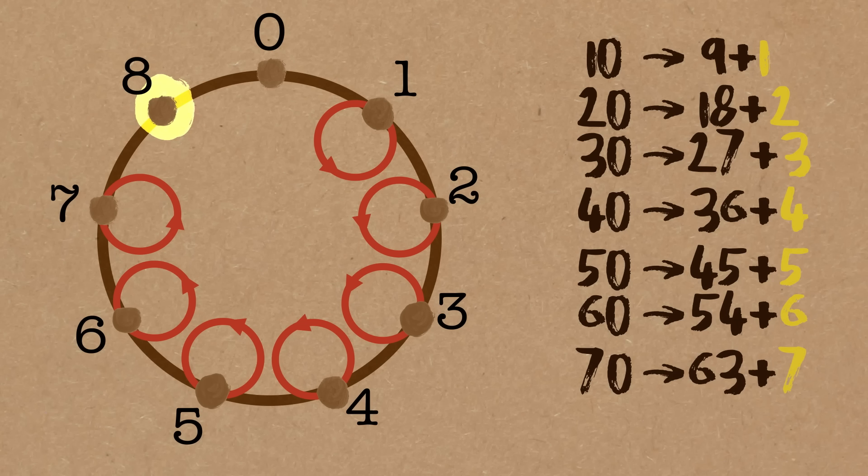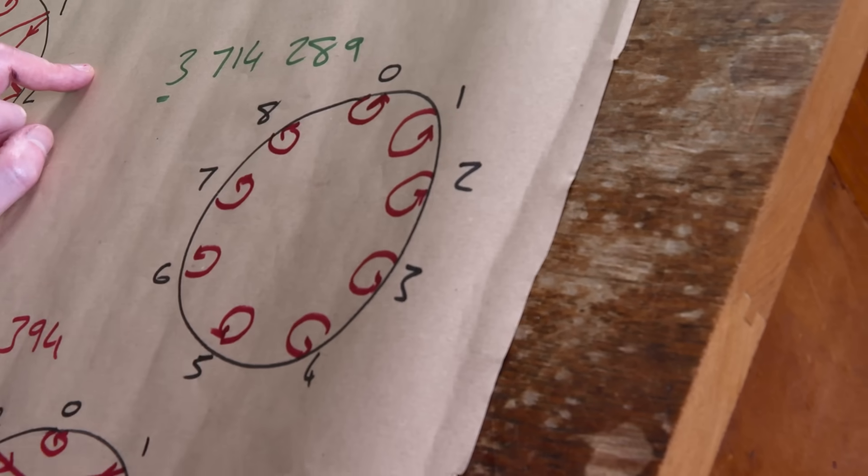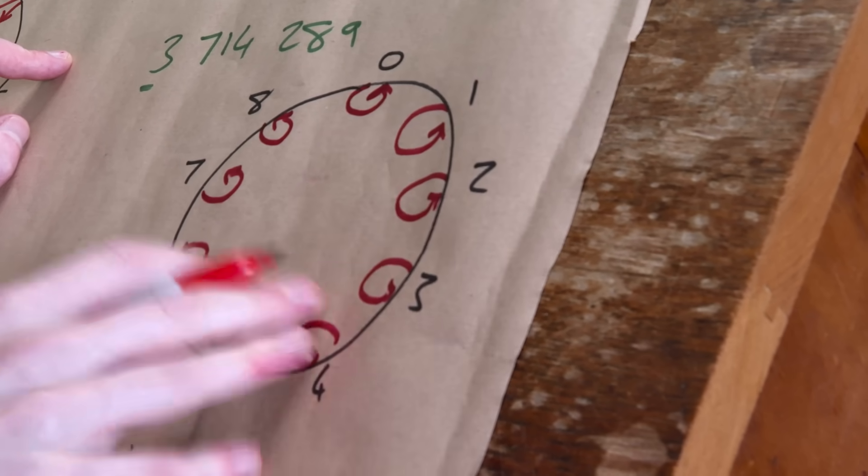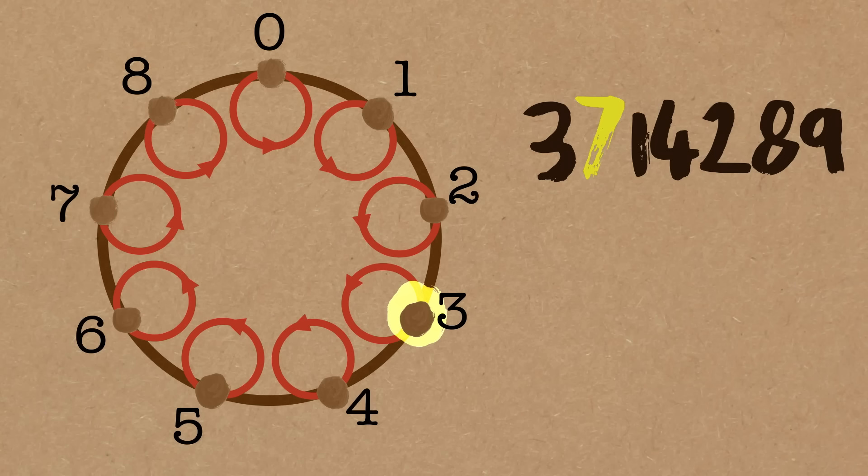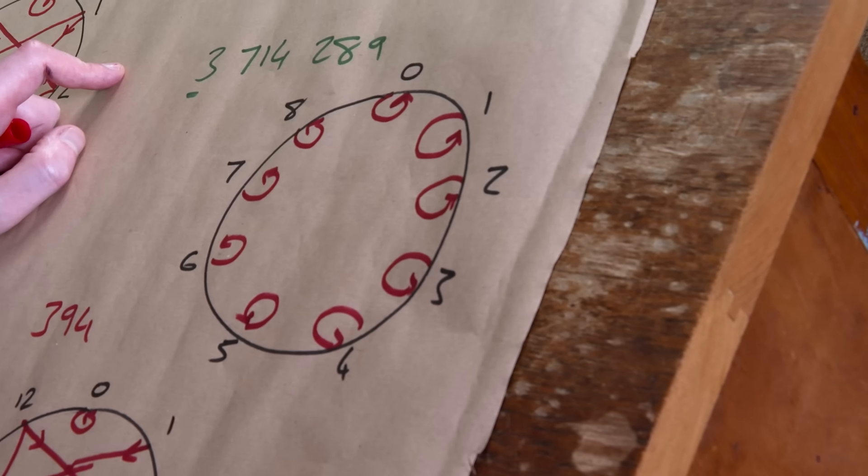So if we did this method, even if we used our big number here, starting on zero, add your first digit, takes me to three, travel the red line, takes me back to three, add the next digit, which is a seven, one, two, three, four, five, six, seven, travel the red line, takes me back to one, add the next digit, it's the same as us adding up all the digits. Which is another way of seeing why the division test for nine works. Easy.